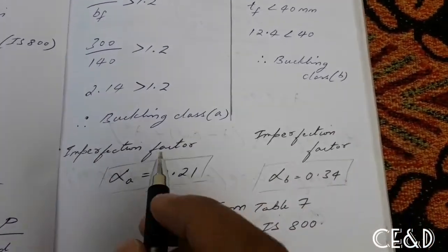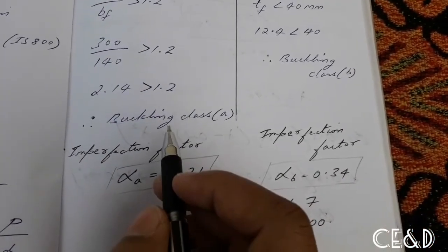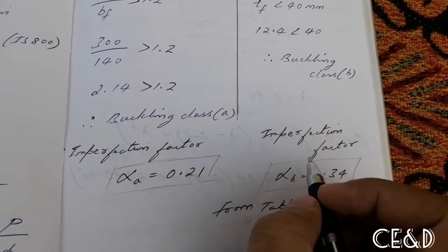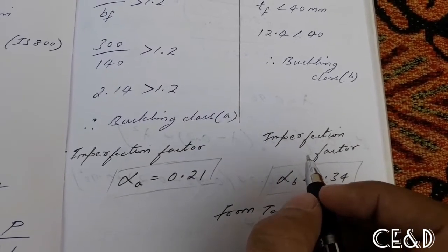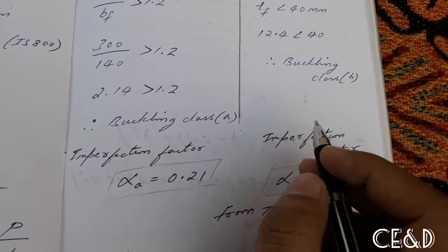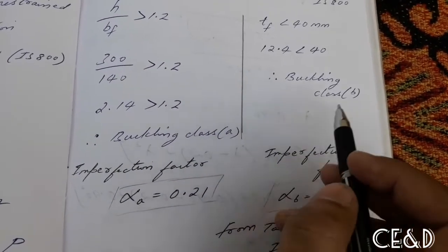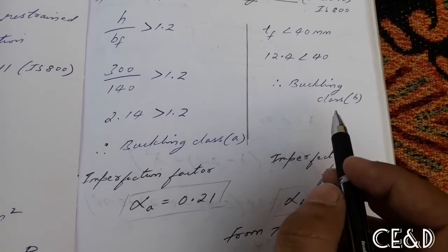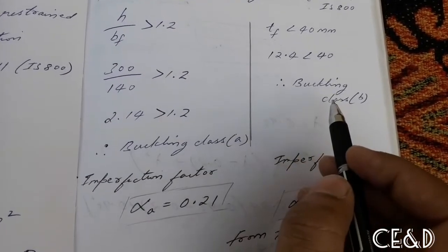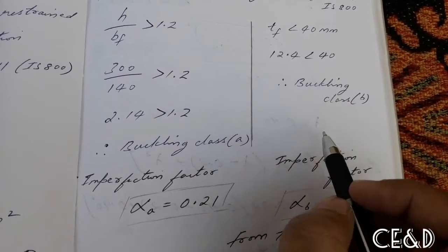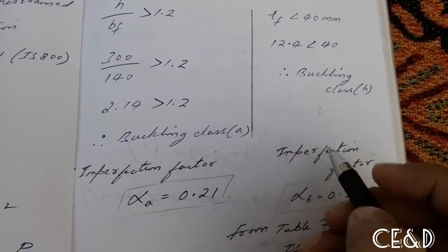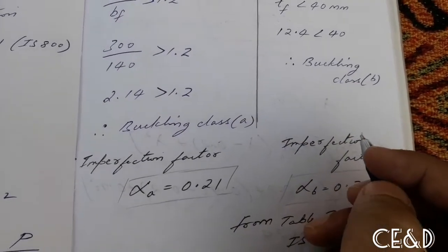Buckling class A refers to one FCD and buckling class B refers to another FCD. To get the minimum answer, proceed with the higher (more conservative) buckling class. If you have A and B, proceed with B. If B and C, proceed with C. Take the minimum FCD value — that is the answer, because alpha values increase in order A < B < C < D.